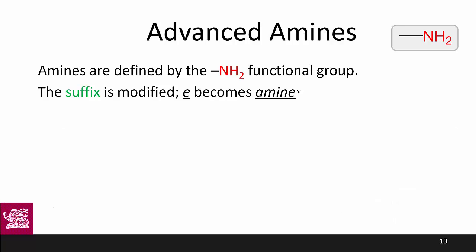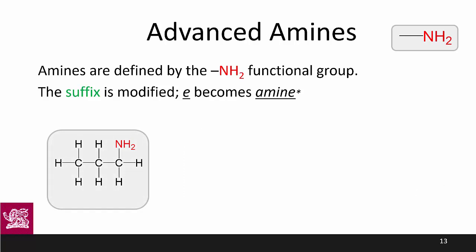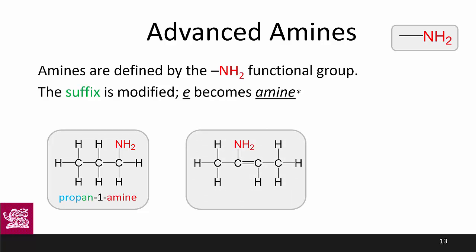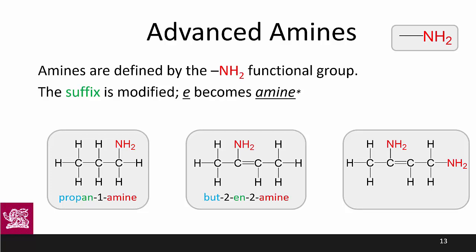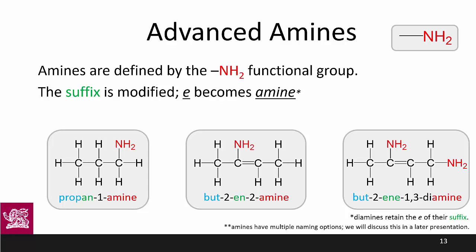Moving on to more advanced amines. Our first example is propan-1-amine. Next is but-2-en-2-amine. Finally, but-2-en-1,3-diamine — diamines retain the '-e' of their suffix. We are always numbering to minimize the first numbers, so this molecule is always a but-2-ene. We could have but-2-ene-2,4-diamine or but-2-ene-1,3-diamine, and by the minimizing number rule, but-2-ene-1,3-diamine is preferred and hence correct. It's also important to note that amines have multiple naming options which we'll discuss in a later video.